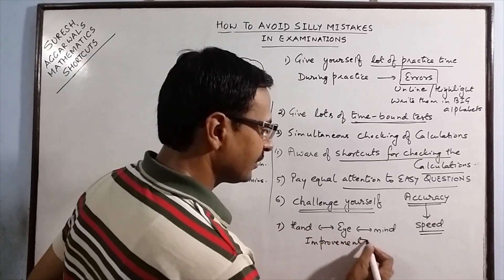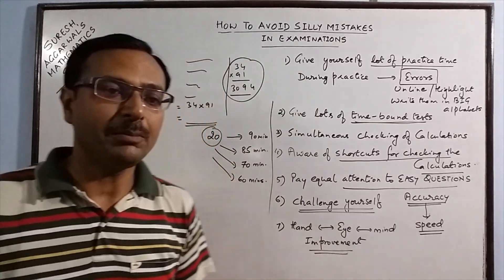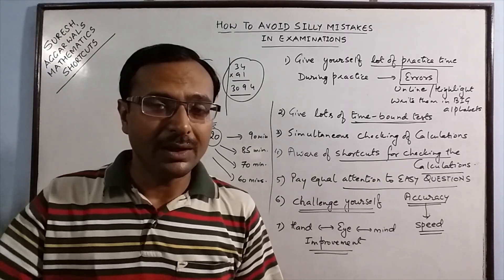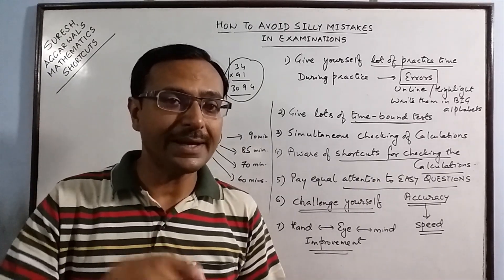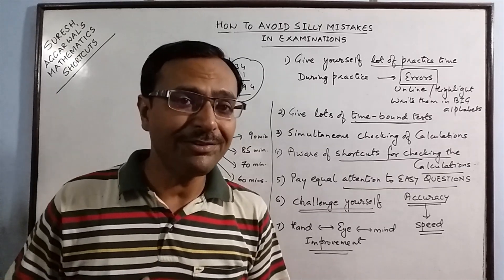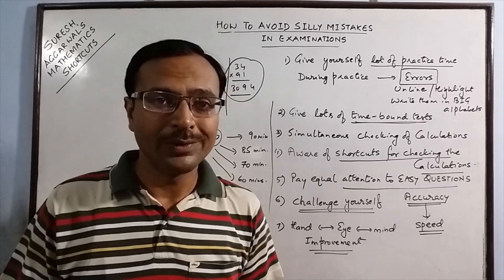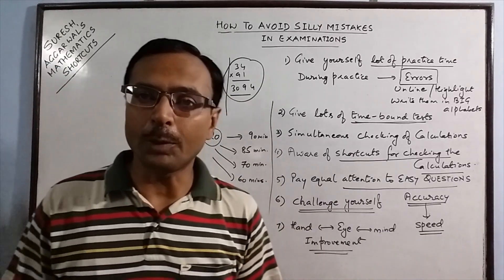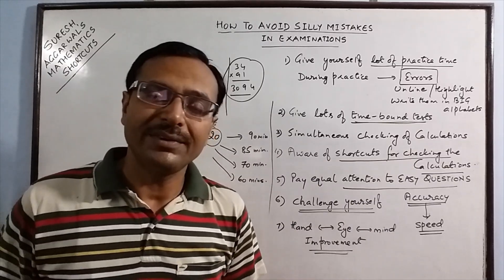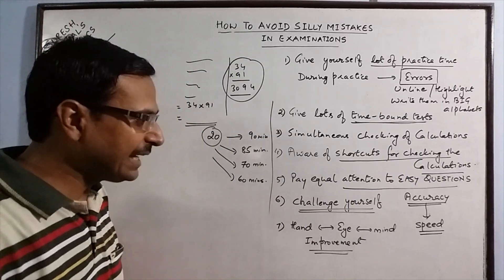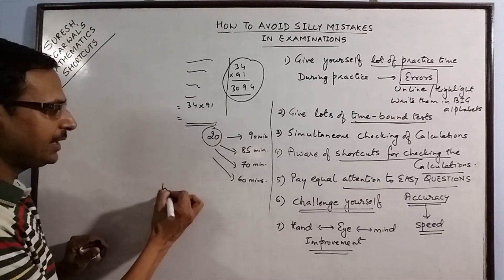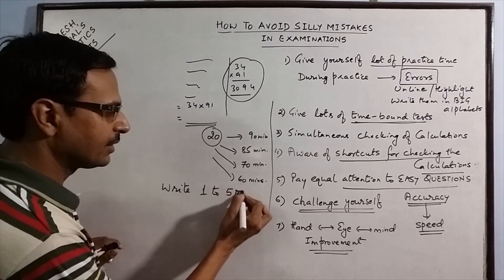Now, this improvement of hand, eye, and mind coordination is very important. Hand should write exactly the same thing which the mind is directing you to write. And if there is lack of coordination between the two, then these silly mistakes will crop up in the answer sheet. One of the methods which I have tested successfully for increasing this hand, eye, and mind coordination is to write 1 to 500 counting.